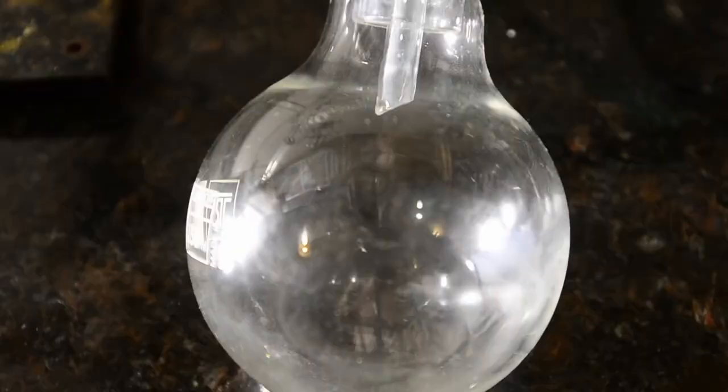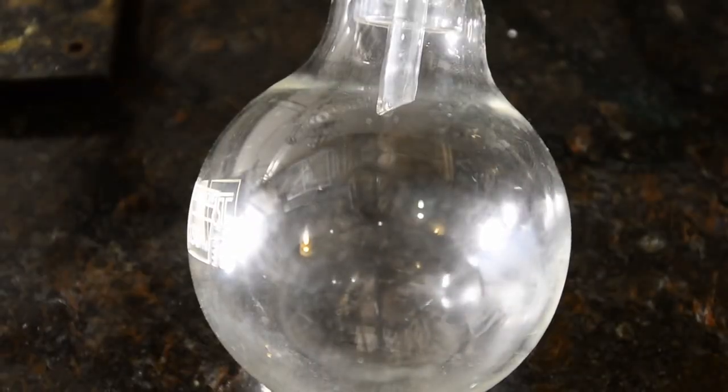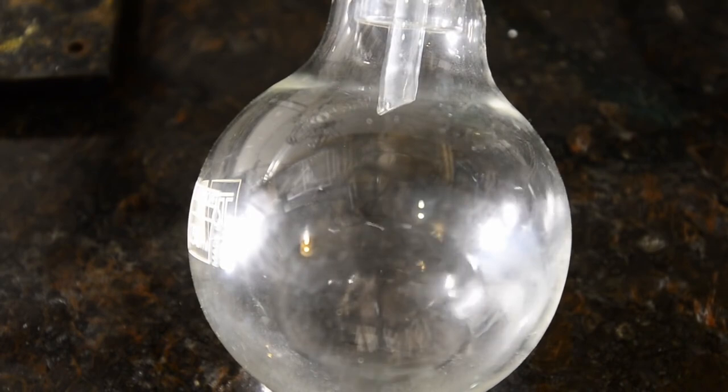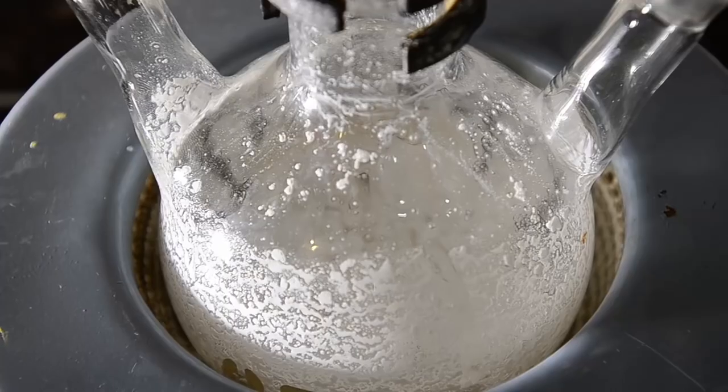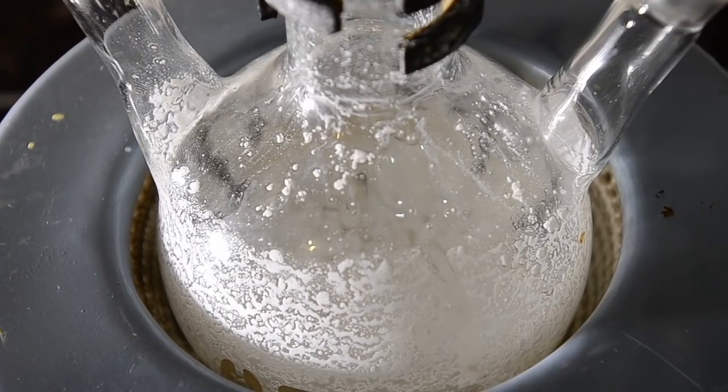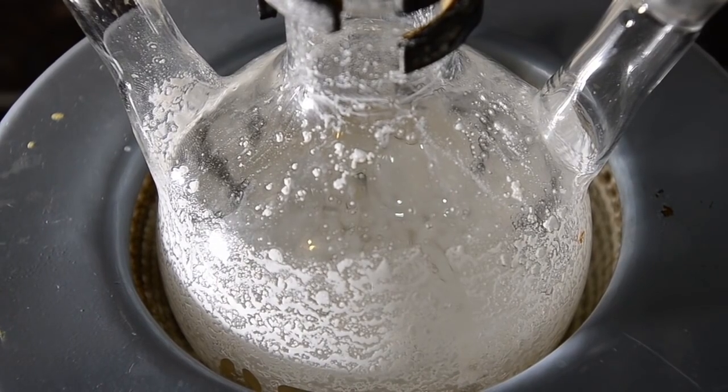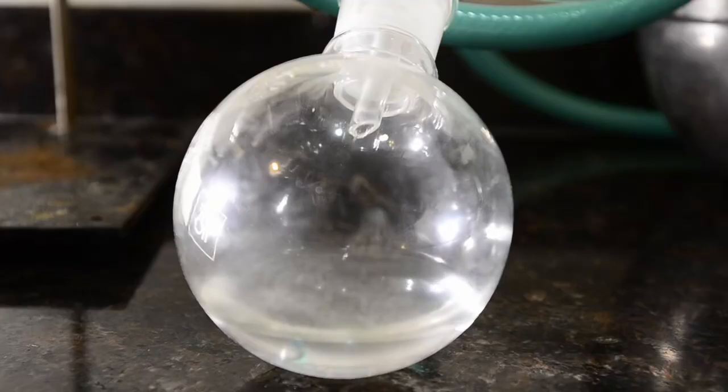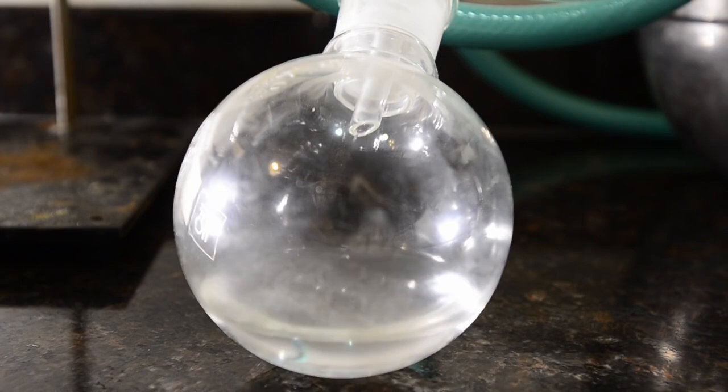Distillation is pretty rapid to begin with and slowly tails off but keeps going for quite a while. As distillation proceeds the slurry in the flask turns more and more solid. Quite a lot of liquid distills off, so don't stop the heat too early.